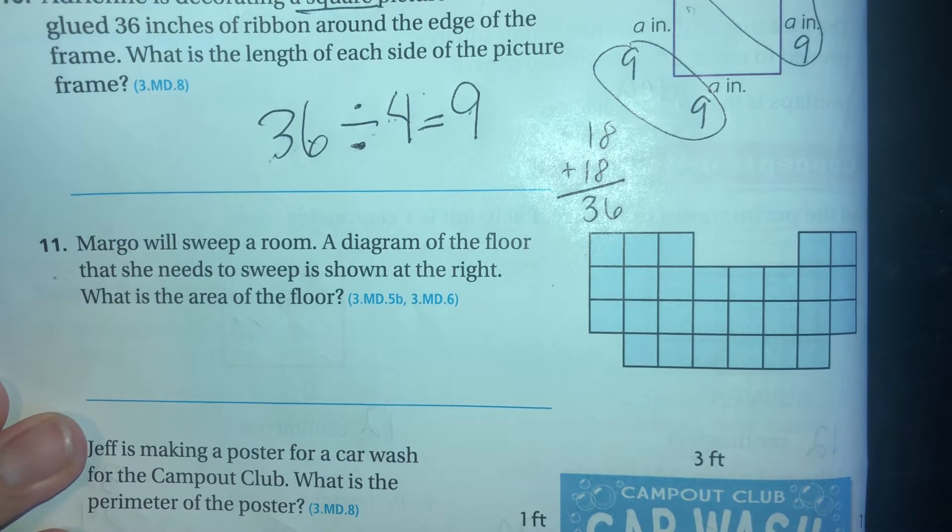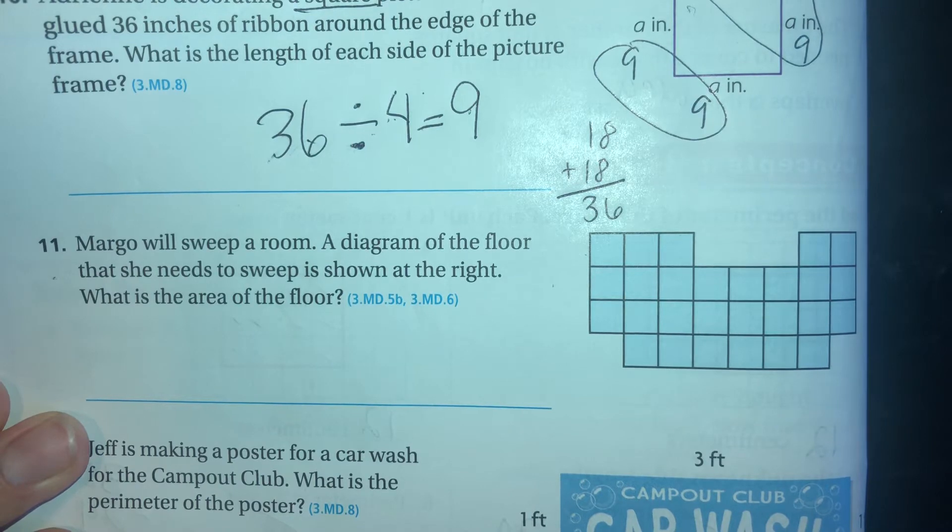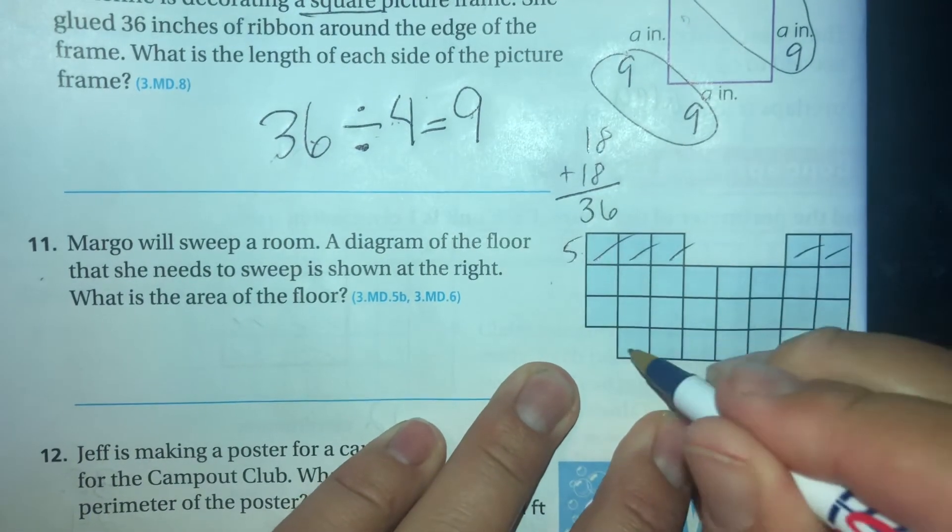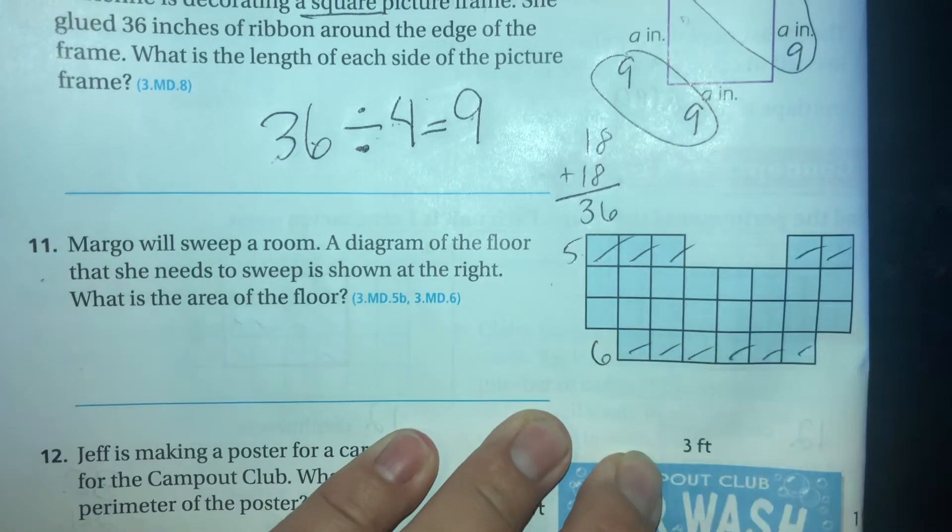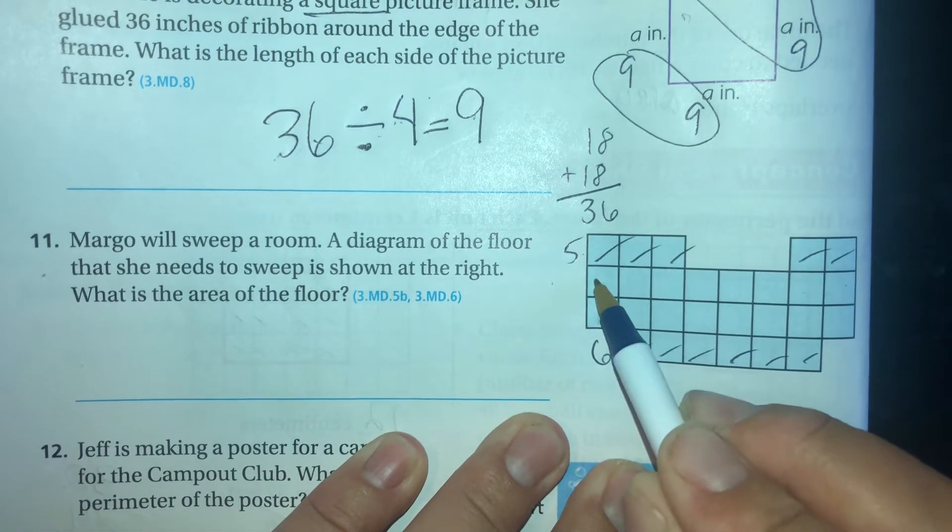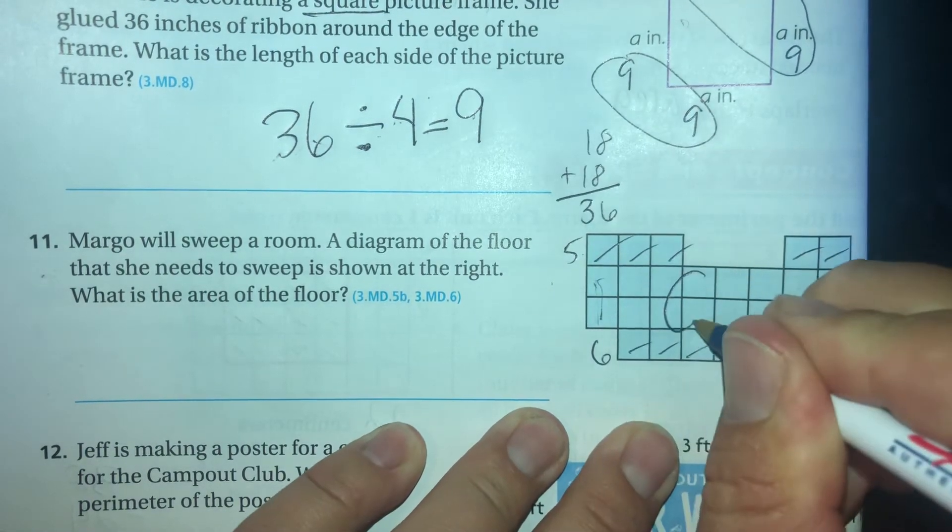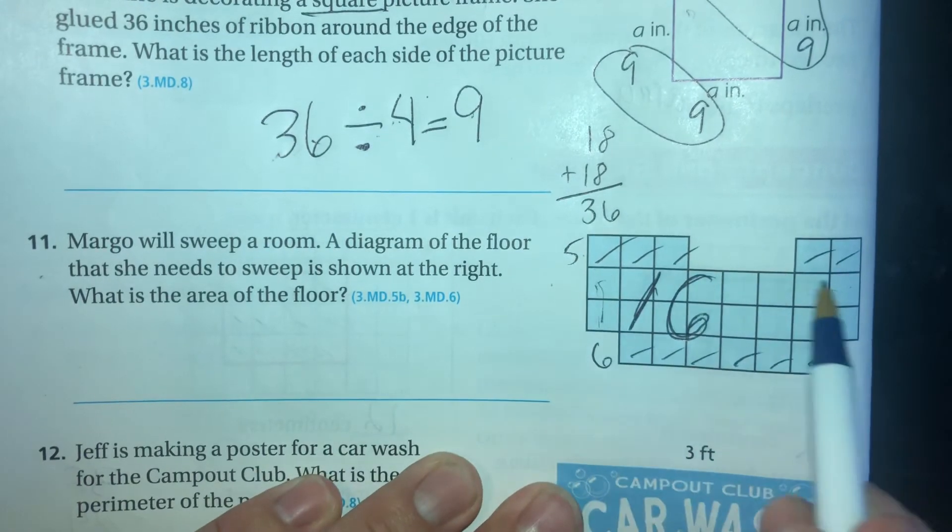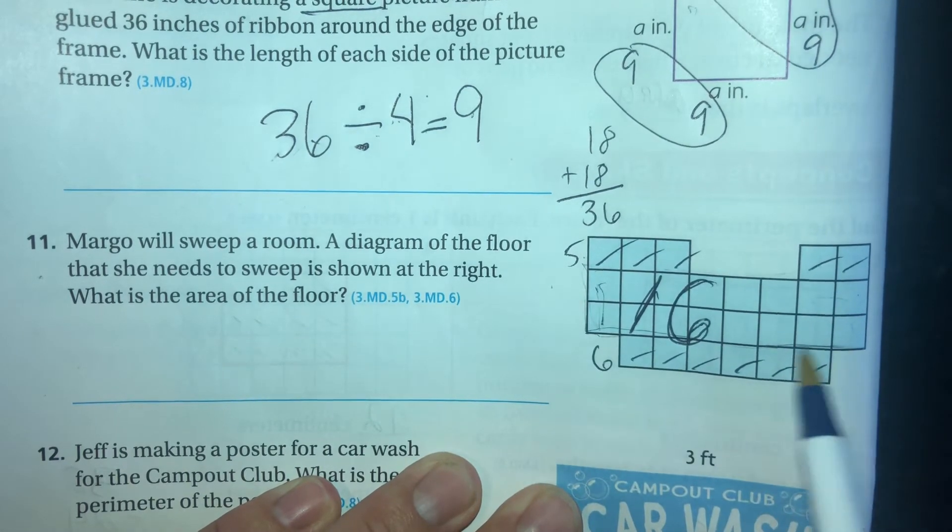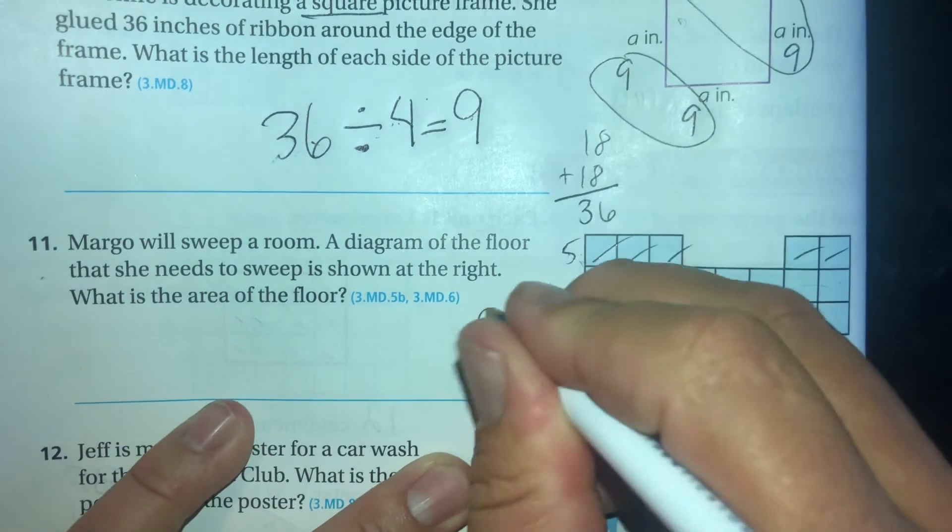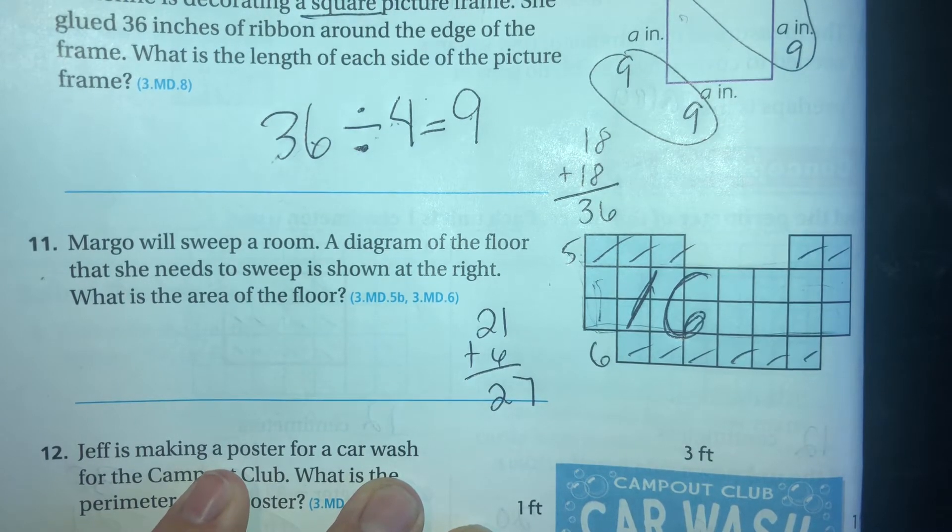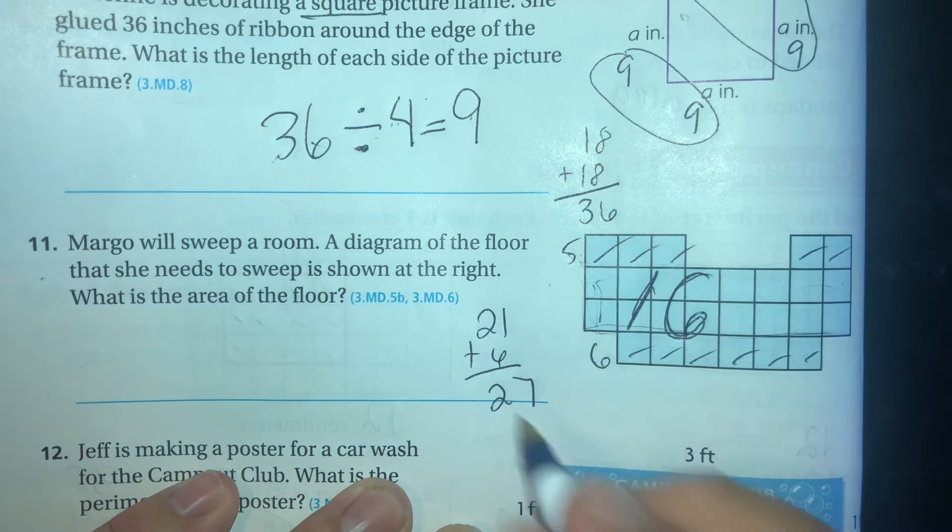Margo will sweep a room. A diagram of the floor that she needs to sweep is shown at the right. What is the area of the floor? Let's see, one, two, three, four, five. One, two, three, four, five, six. And this is a 2 by - one, two, three, four, five, six, seven, eight. So this is a 2 by 8, so this whole thing is 16. This piece, this rectangle is 16. So 16 plus 5 is 21, plus 6 is 27. Does it say that these are meters or anything? No. Okay, so 27.